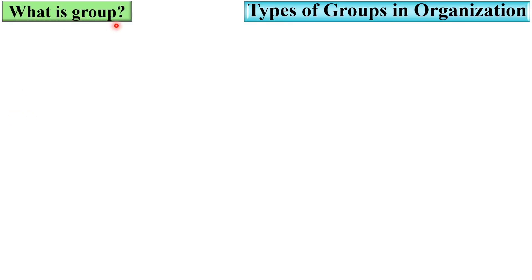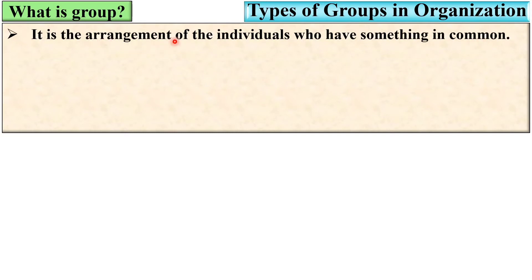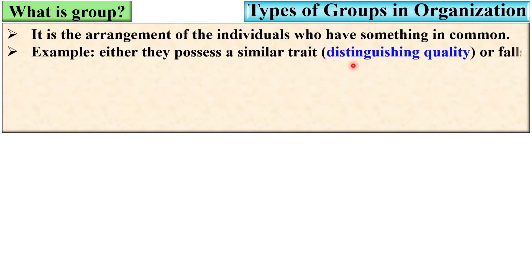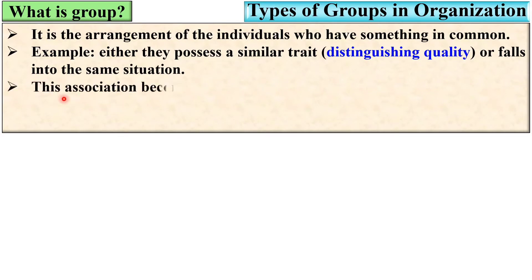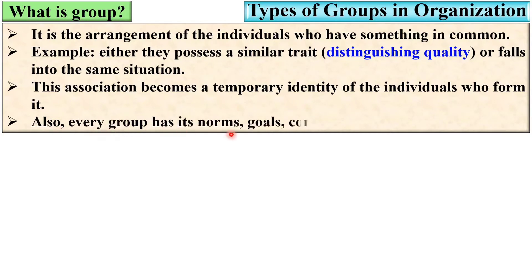Let us start with the introduction of the group. It is the arrangement of individuals who have something in common — that can be a common hobby, common interests, common ambitions, etc. Either they possess a similar trait, meaning a distinguishing quality, or fall into the same situations. Every group has its norms, goals, composition and criteria.